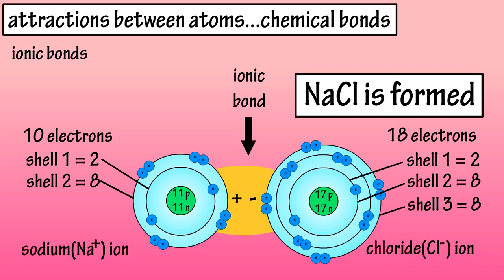So, ionic bonding is when an electron transfer takes place and generates two oppositely charged ions.